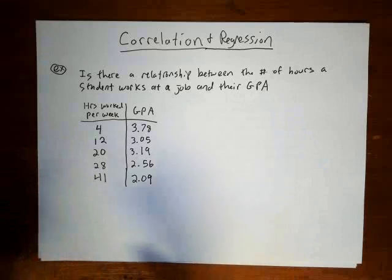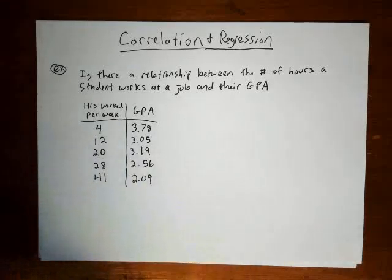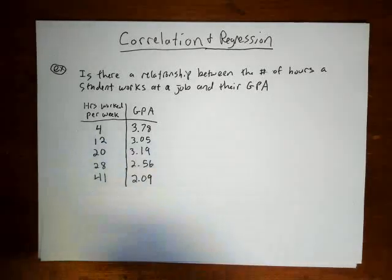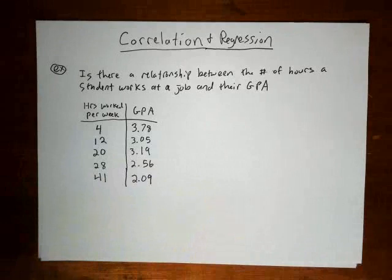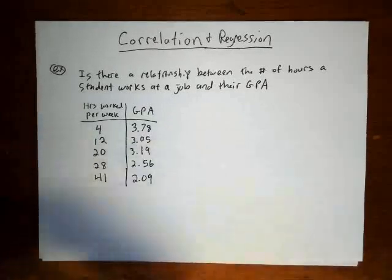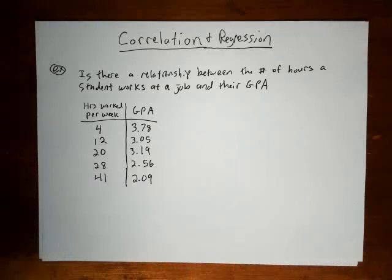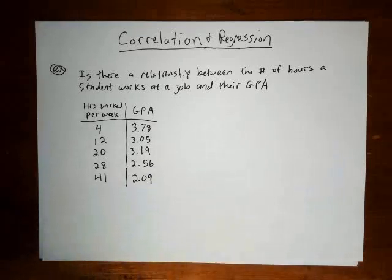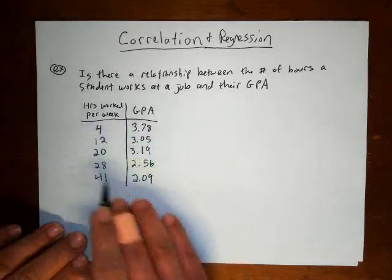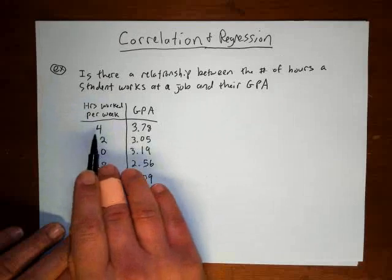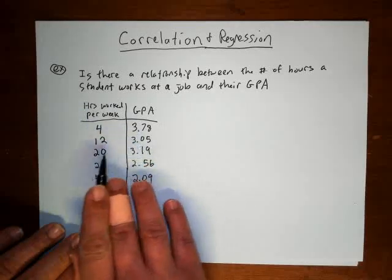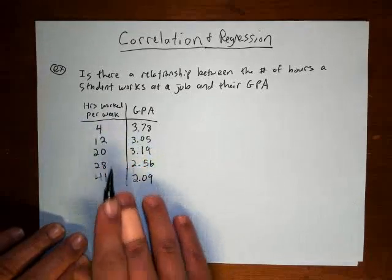I'm going to start with an example that I use when I introduce the idea of a correlation study — I really like this example. We're going to use it to introduce each of the different concepts as we go through the section. It gives you a nice picture of not just how to analyze this, but also why this sort of thing might be useful. A researcher wanted to know if there was a relationship between the number of hours a student works at a job and their grade point average. He took a sample of five college students, recording the number of hours they work and their GPA, generating a set of bivariate data — two variables.